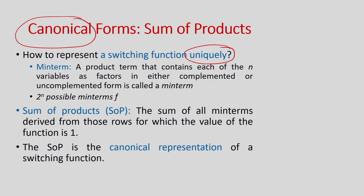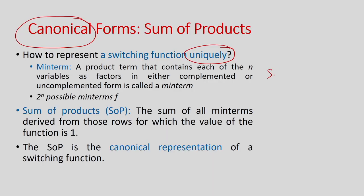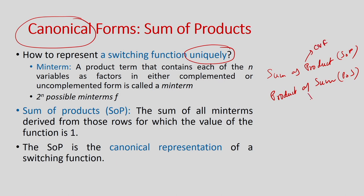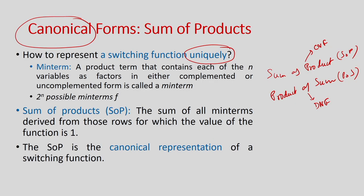For switching functions, there are two well-known Canonical Forms: one is called Sum of Product (SOP) and the other is Product of Sum (POS). SOP is also known as Disjunctive Normal Form (DNF), and POS is also known as Conjunctive Normal Form (CNF). In today's class, we will talk about these two canonical forms and how to convert any expression into these forms.